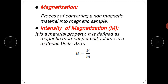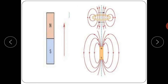The intensity of magnetization is a material property. It is defined as magnetic moment per unit volume in a material. The unit is ampere per meter. H is equal to force divided by m, in ampere per meter.